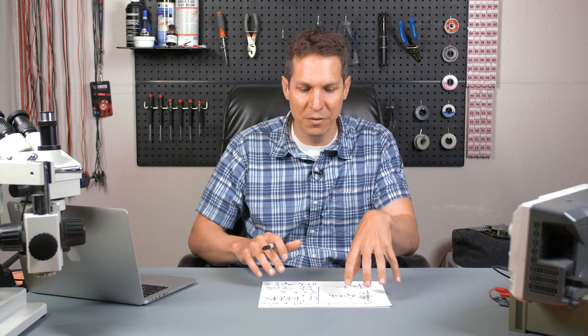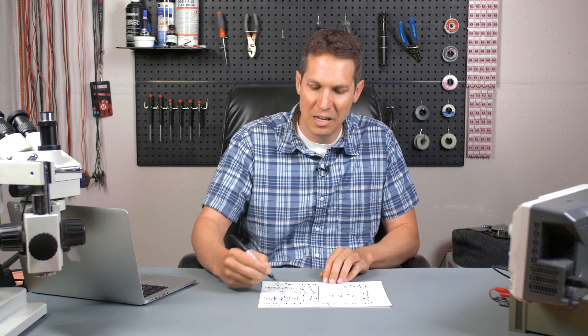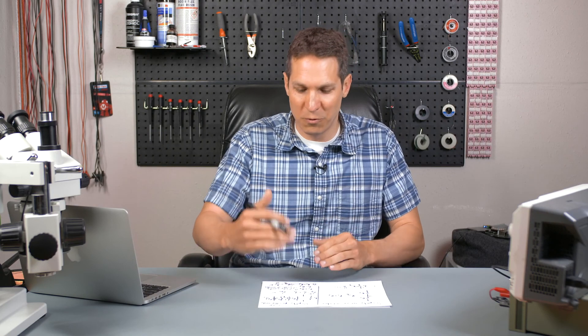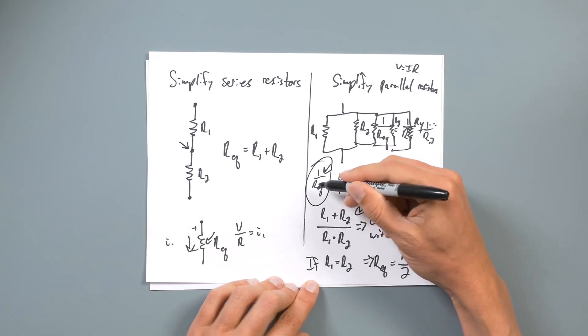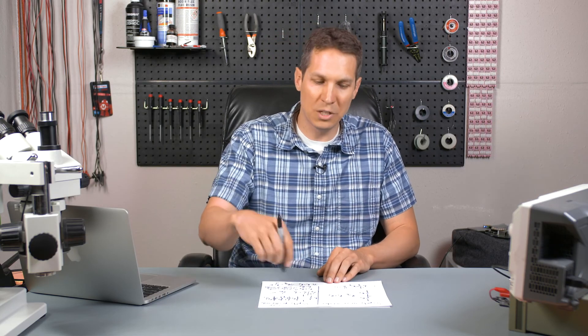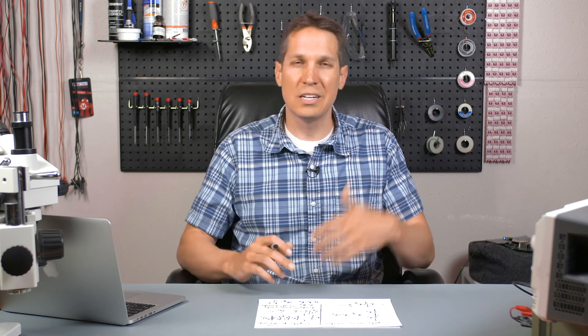That is how you simplify series and parallel resistors, and you will use this all the time. Do it a couple of times and it'll become intuitive and easy. Just make sure you use an equation that actually works for your situation, and make sure you invert the end result when using the parallel formula — that happens all the time. These are pretty straightforward and this is how you simplify the most basic circuits. Even once you get into more complicated circuits that need KCL or KVL, you can sometimes simplify them first before jumping in, which makes your life and the math a lot easier. I hope this was super helpful — give the video a like, subscribe, and we'll catch you in the next one.